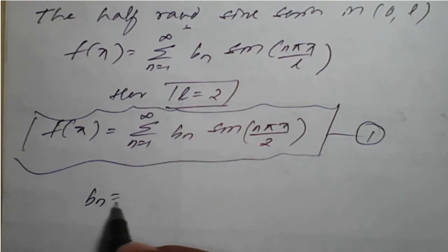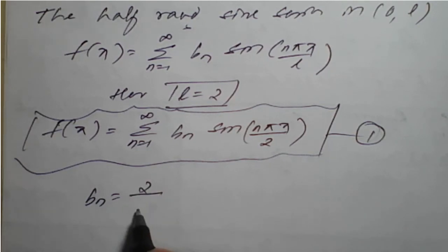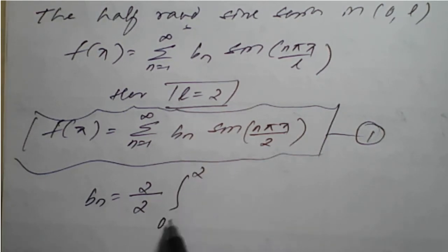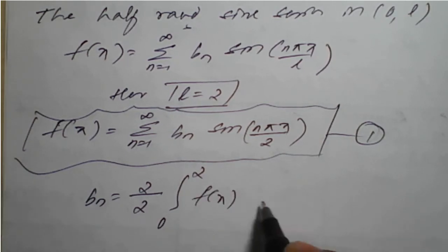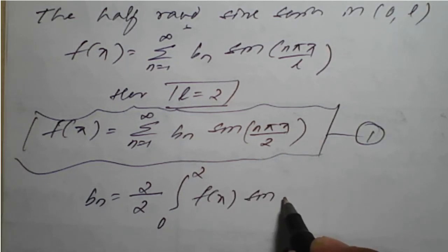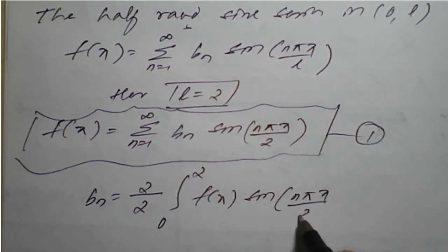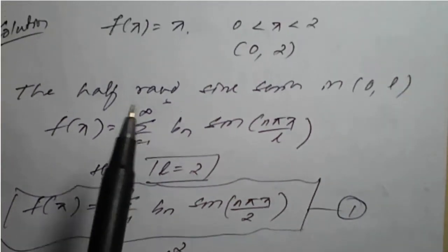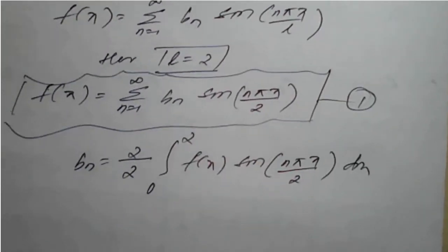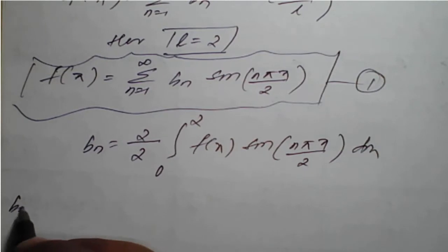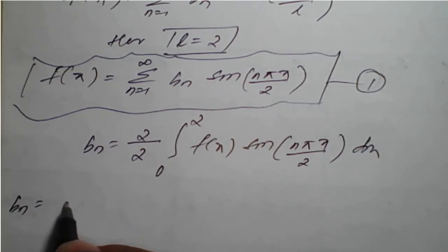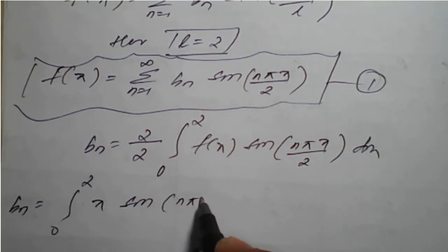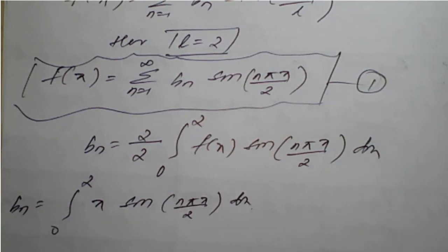The Fourier coefficient b_n is given by (2/l) times the integral from 0 to l of f(x) sine(nπx / l) dx. Since l = 2, this becomes (2/2) times the integral from 0 to 2 of f(x) sine(nπx / 2) dx. Since f(x) = x, we replace it: b_n = integral from 0 to 2 of x sine(nπx / 2) dx.